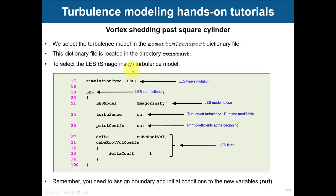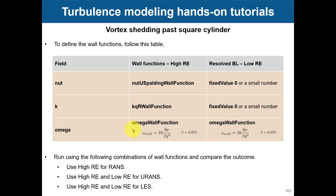Just to remind you: to set up turbulence models it's always in momentumTransport. To set up LES it's exactly the same — instead of using RAS, put LES, and then choose the turbulence model. Turbulence modeling is a very wide field. For LES there are many turbulence models. In this case we're using Smagorinsky with default options. Remember that wall functions need to be defined. With LES you are only solving for nut depending on the turbulence model and formulation.